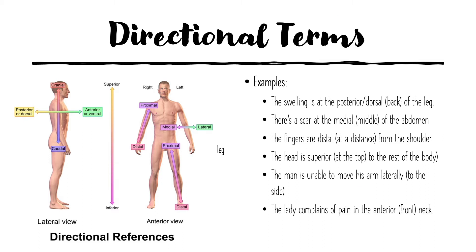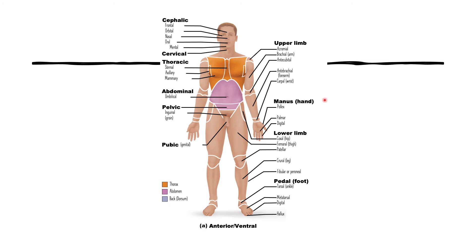Now moving on to regional body terms. We start with cephalic, meaning head — similar to cranial but more specific. Under the cephalic region: frontal refers to the forehead, orbital is where the eyes are located, nasal is by the nose, and oral refers to the entire mouth area.